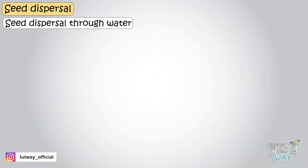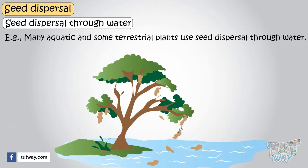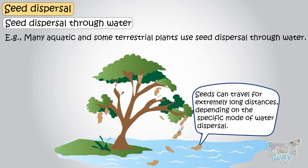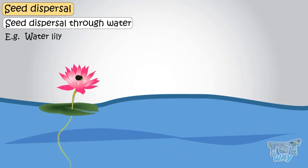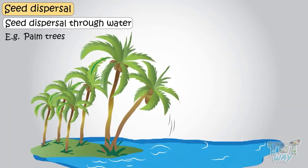Water: many aquatic and some terrestrial plants use seed dispersal through water. Seeds can travel for extremely long distances depending on the specific mode of water dispersal. The water lily is an example — its flowers make a fruit that floats in the water for a while and then drops down to the bottom to take root on the floor of the pond.